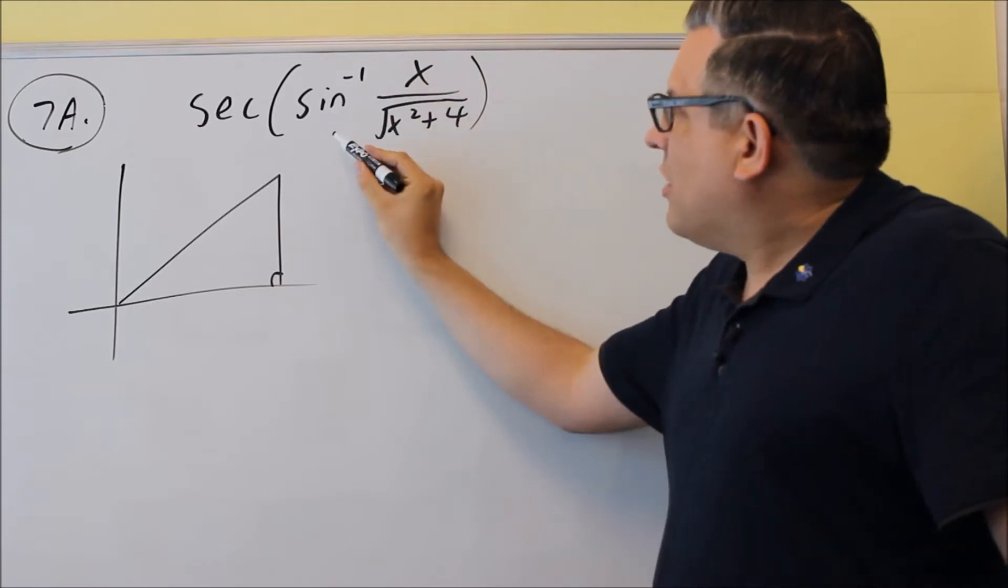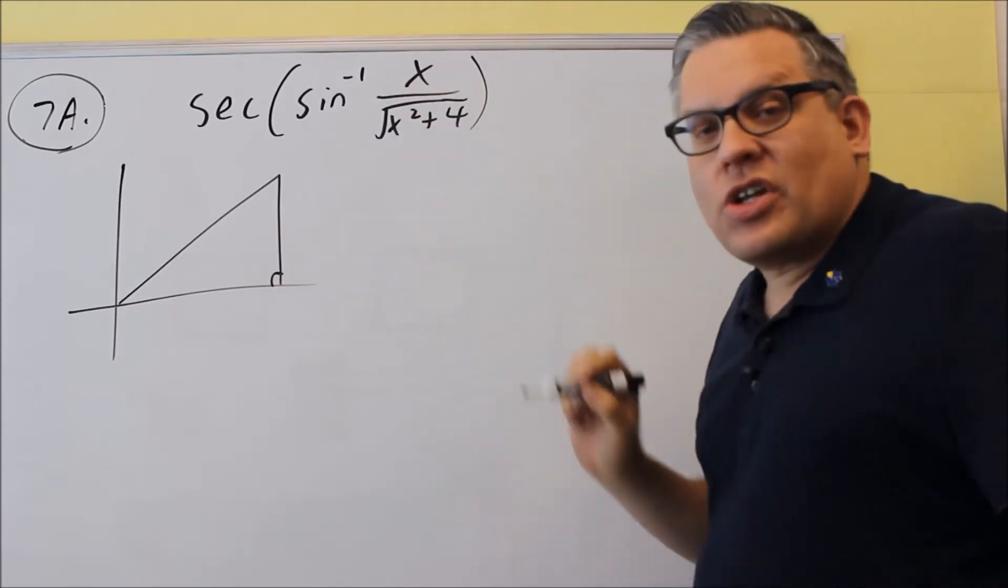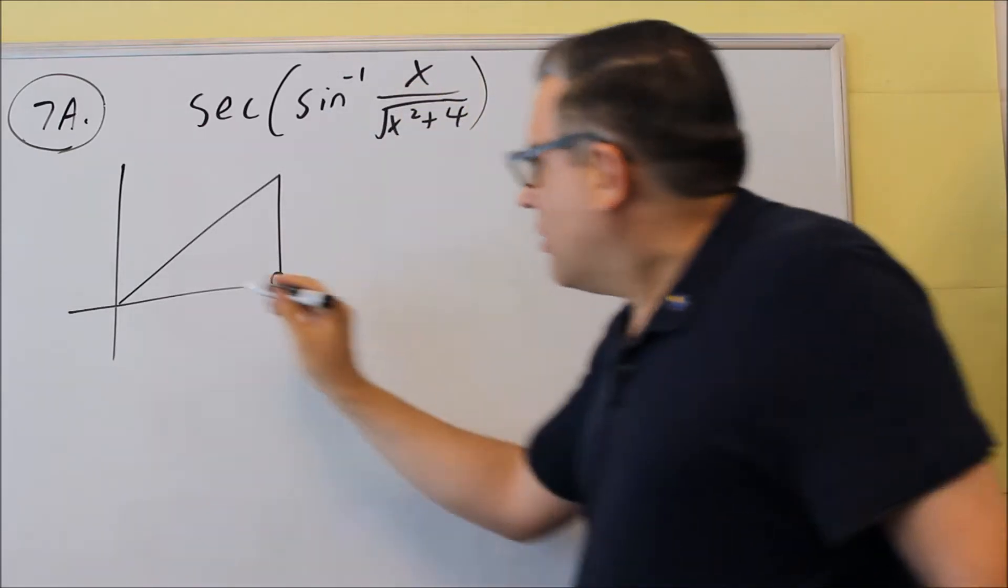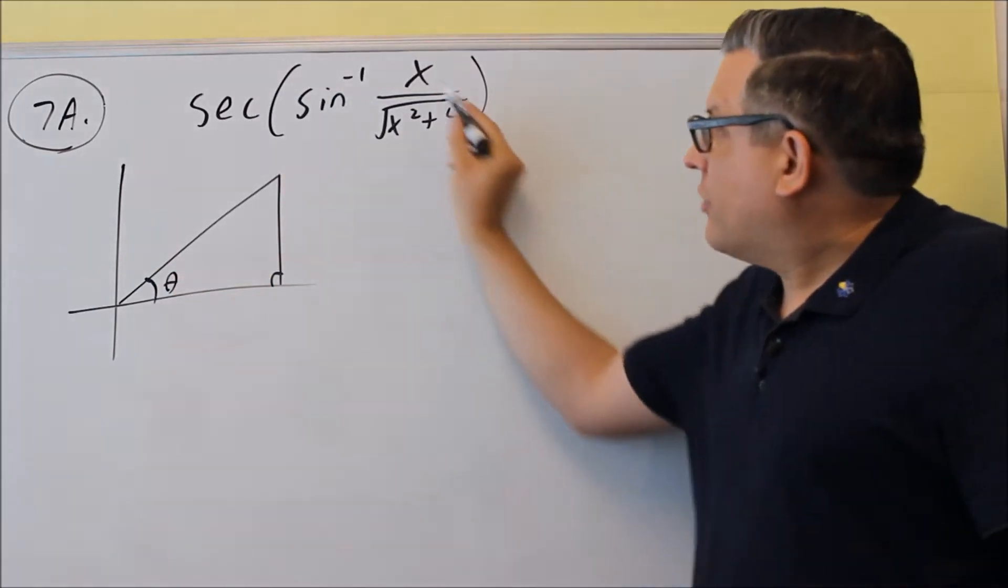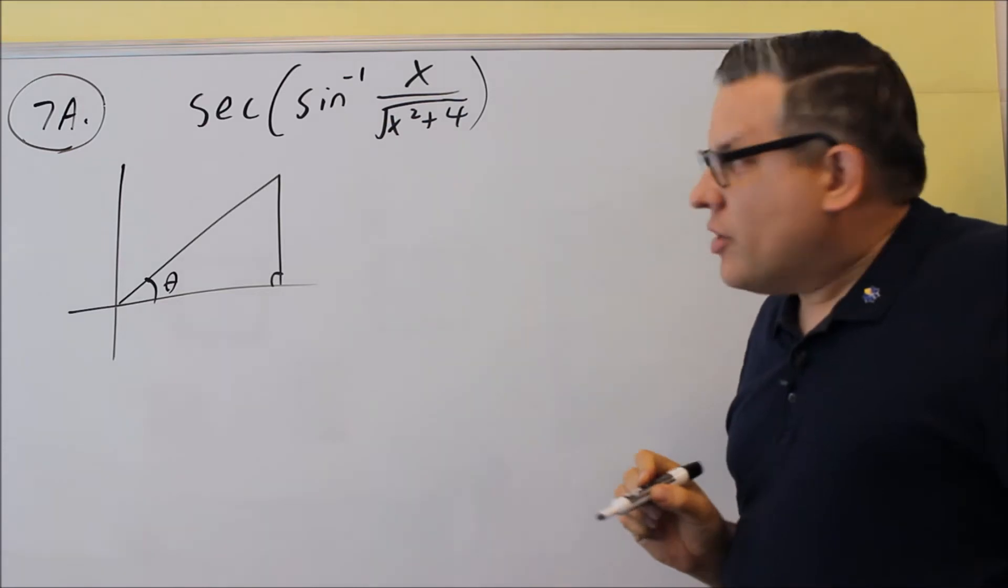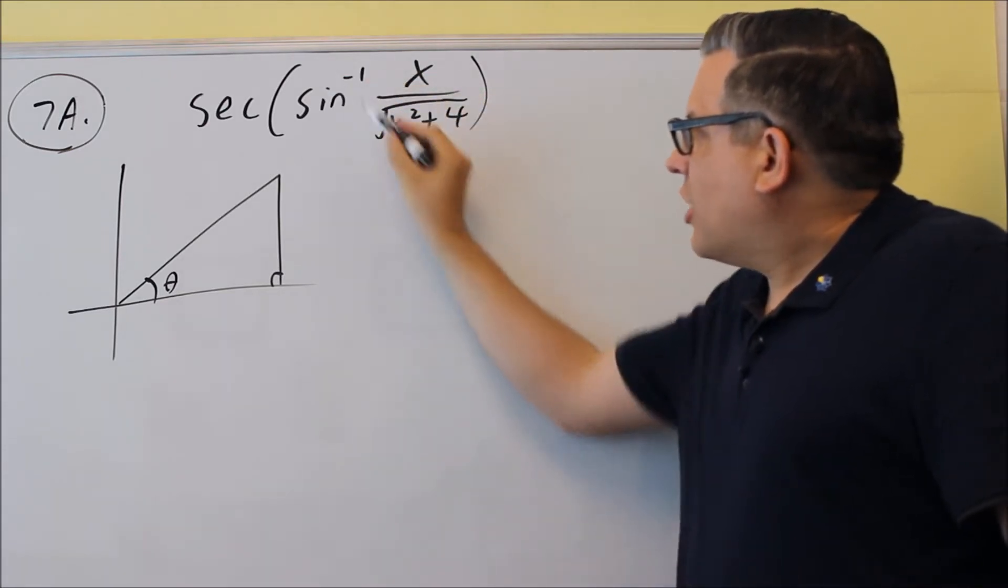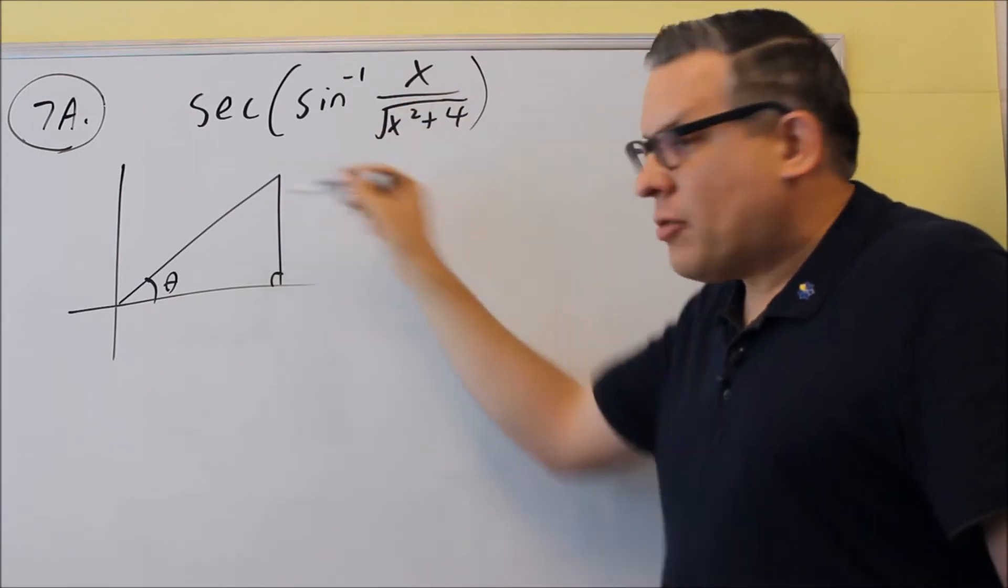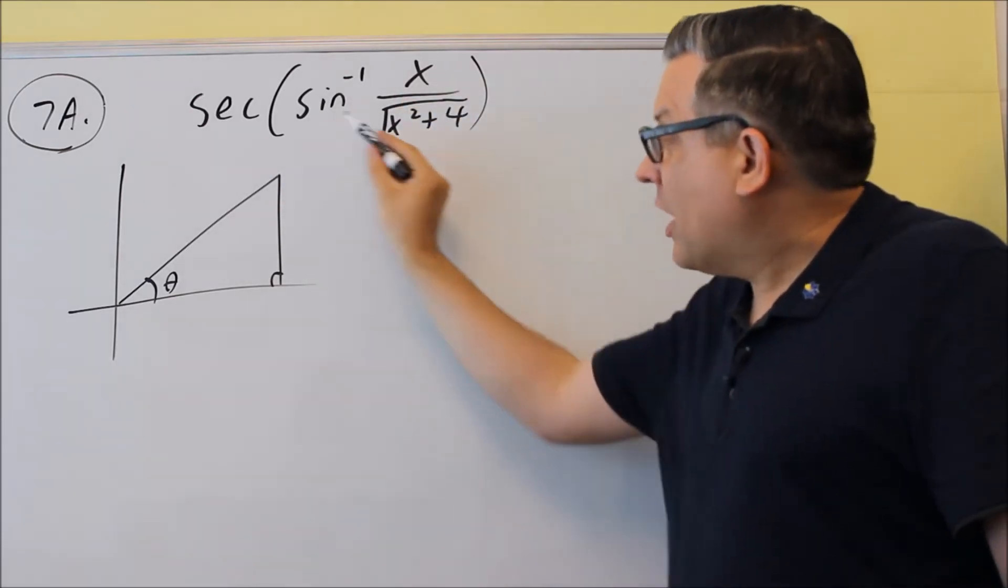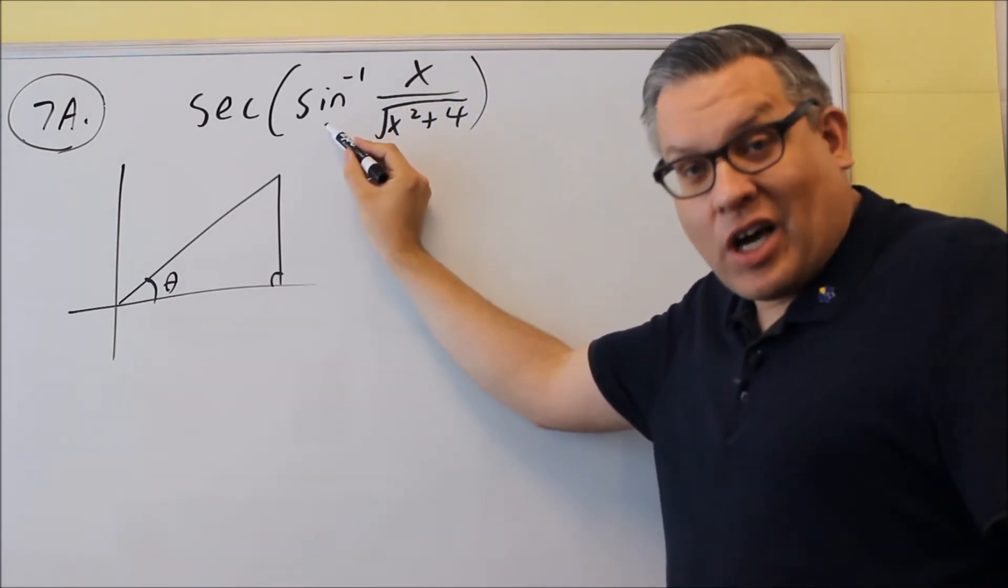And we want to use the definition for sine to label the sides. It means that the inverse sine is always going to give you an angle theta. And that particular angle is going to be this one right here that all this is referring to. So I'm going to use the inside one to label my triangle. So the inside trig function, I label the triangle with.